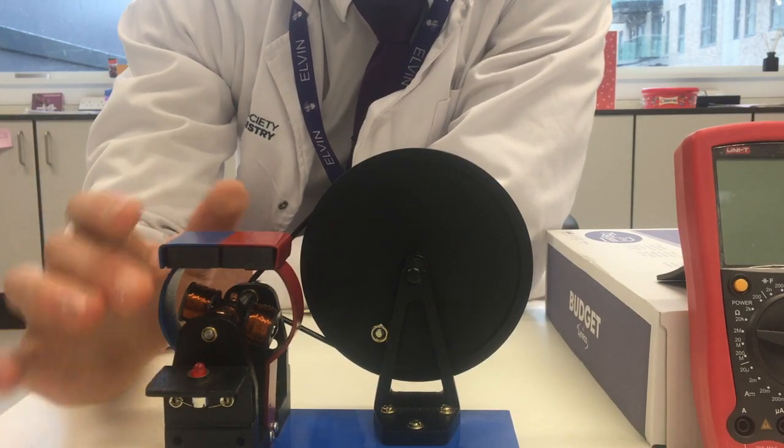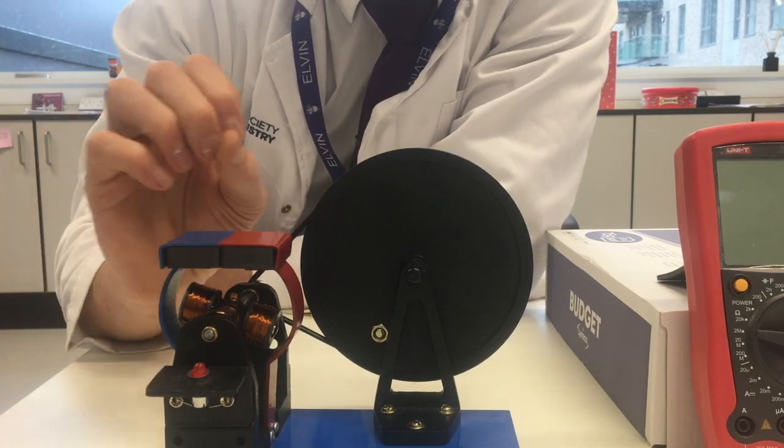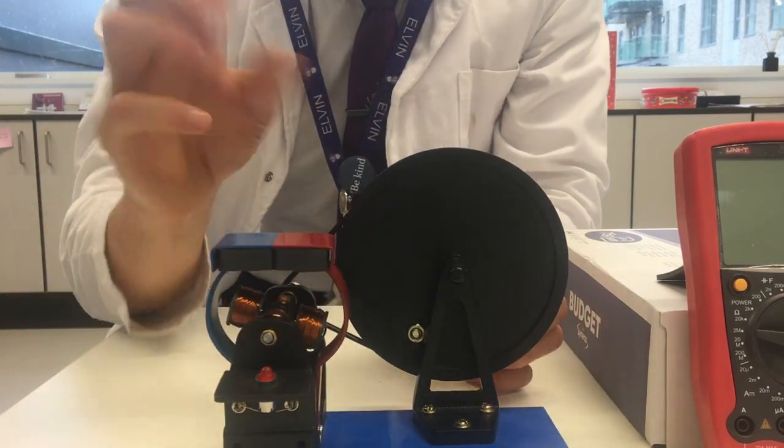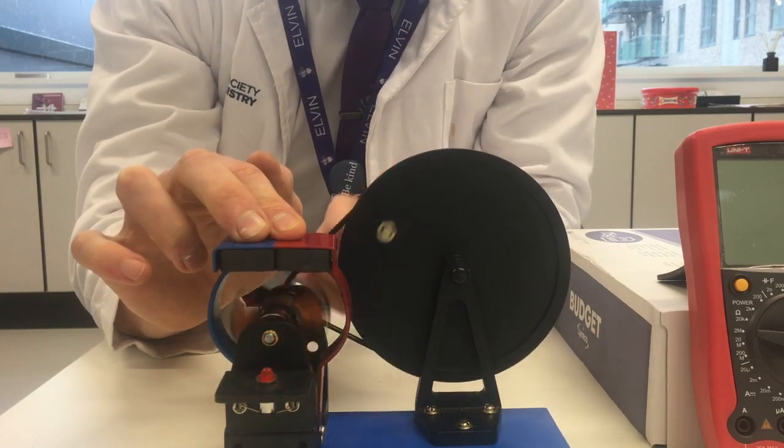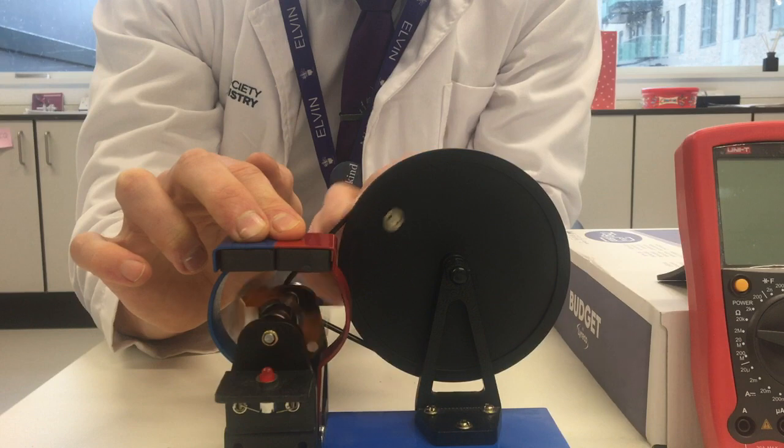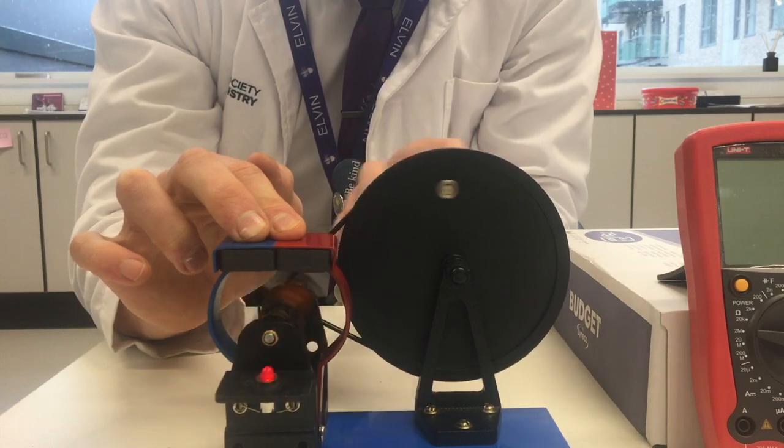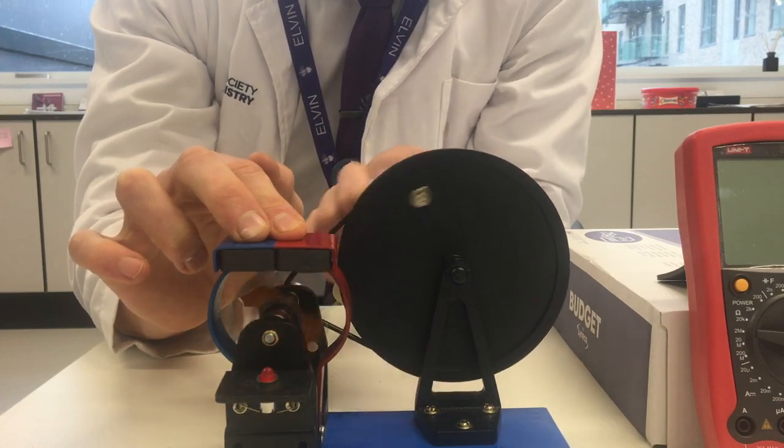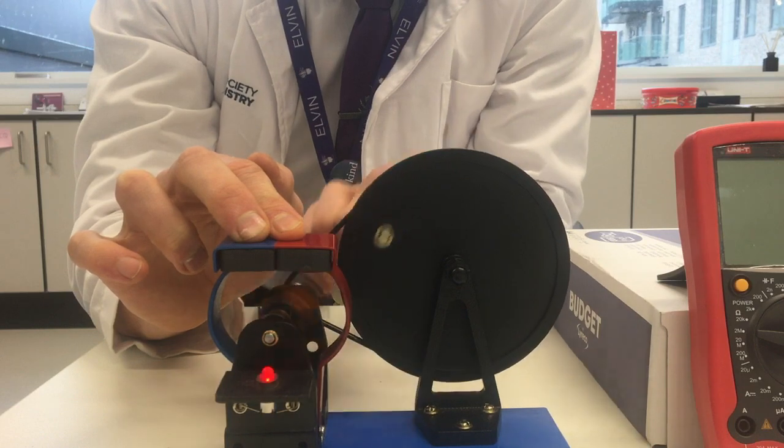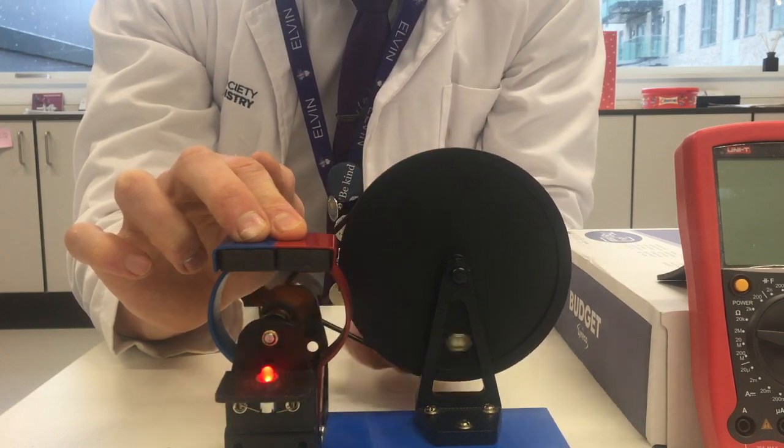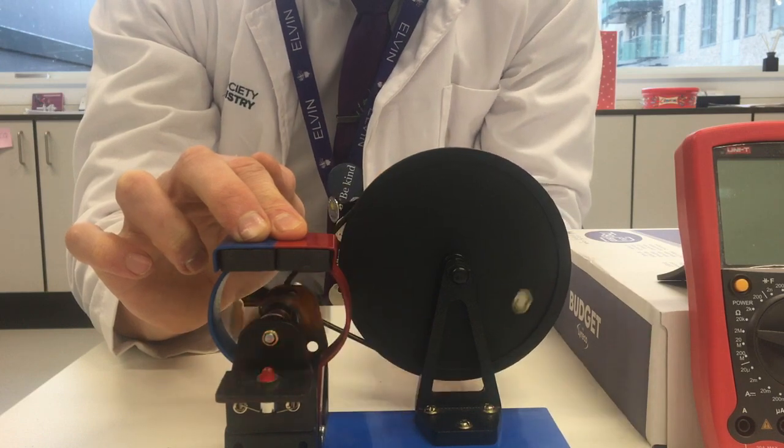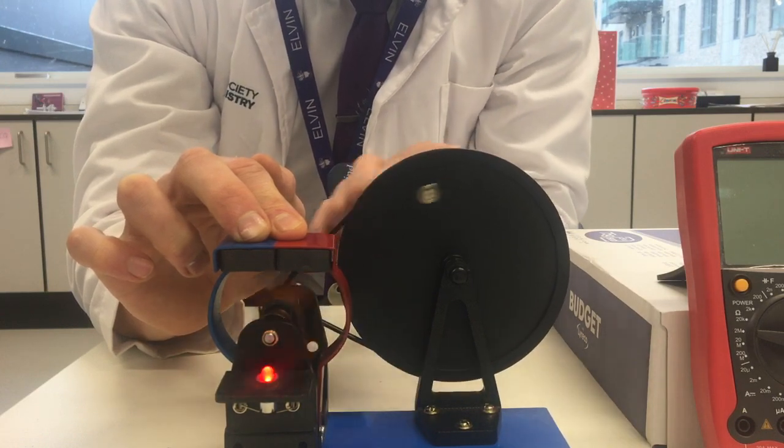The thing to look at as well is that as I turn it, you might be able to see the LED is actually flashing on and off very quickly. There we go. I'll go as slowly as I can while still producing enough speed to light it up. Because the faster the conductor moves through the magnetic field, the greater the current induced, because I'm crossing more field lines in less time.